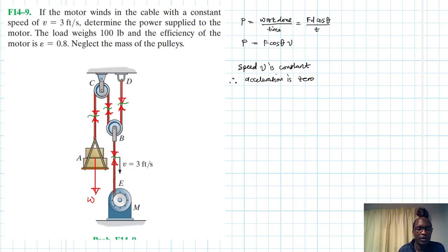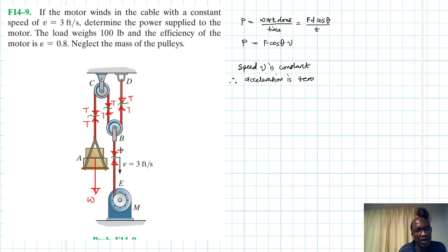Since the acceleration is zero, each cable segment carries tension T. This means we have T, T, T, so the combined force becomes 2T here, and this is also 2T.